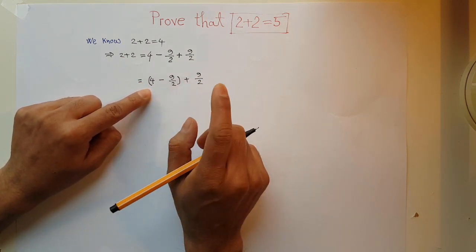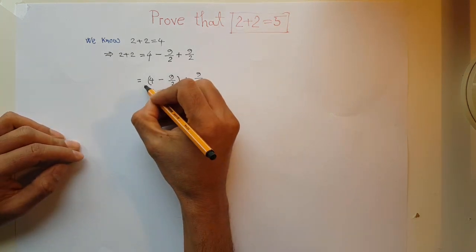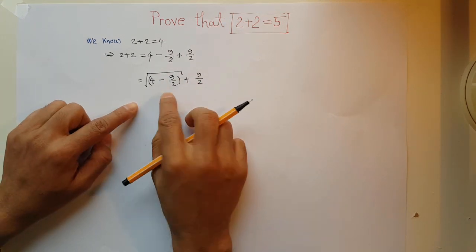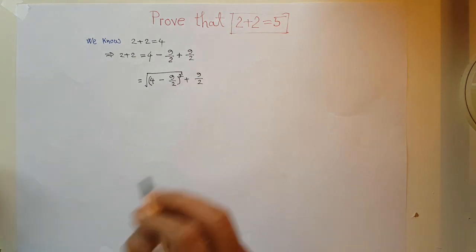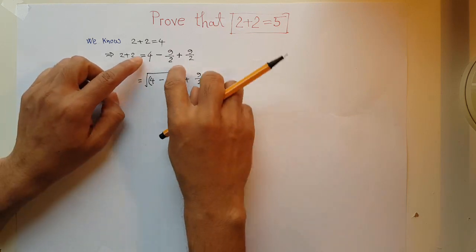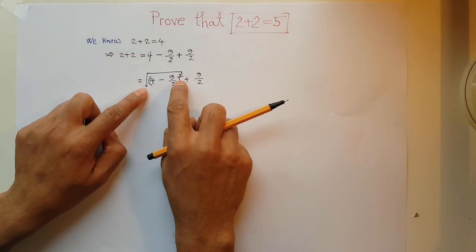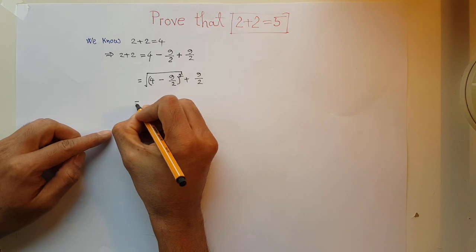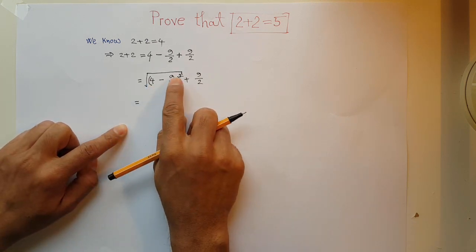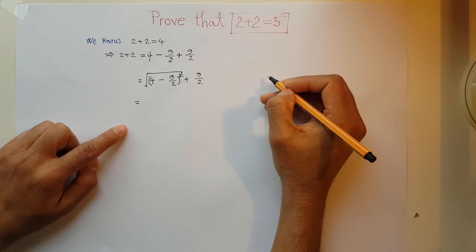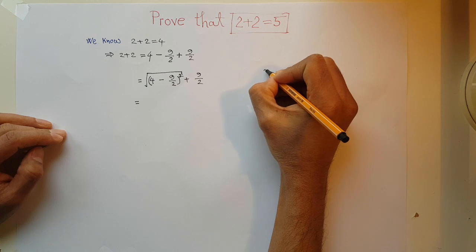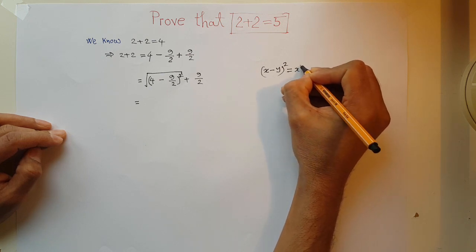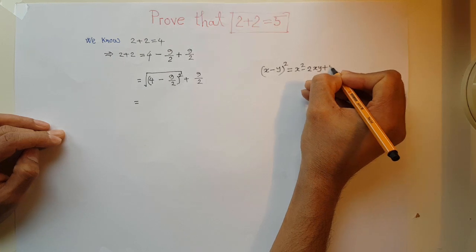At this stage of my calculation, I would like to apply a mathematical engineering. I am introducing a square root over this part. So if I introduce this square root, I have to add a square here because square and square root cancel each other. Next, x minus y whole square, we know a very common formula from high school level: x minus y whole square equals x square minus twice xy plus y square.